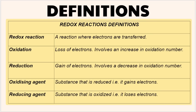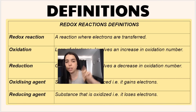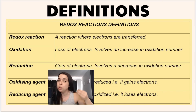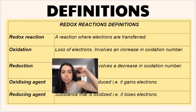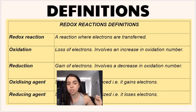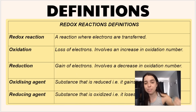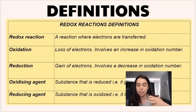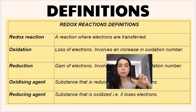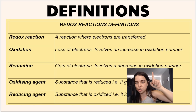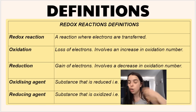Here is a very important summary of definitions you need to know. Oxidation is the loss of electrons; reduction is the gain of electrons. You can also define oxidation and reduction in terms of oxidation numbers — we will cover those in more detail in another video. If we see an increase in oxidation number, the substance has been oxidized. If we see a decrease in oxidation number, the substance has been reduced.